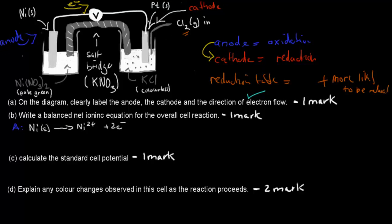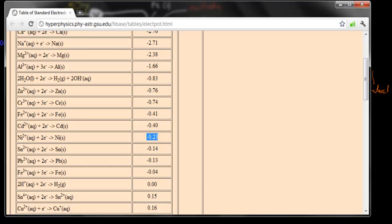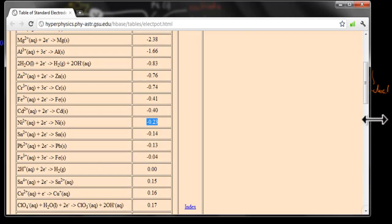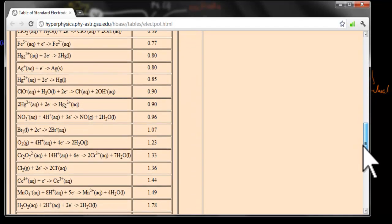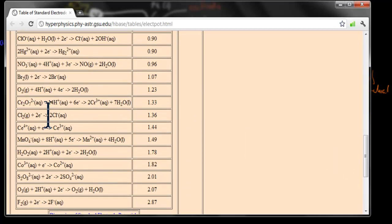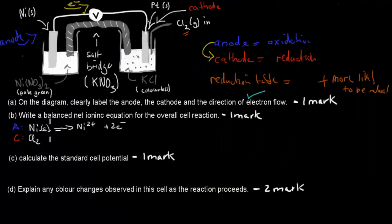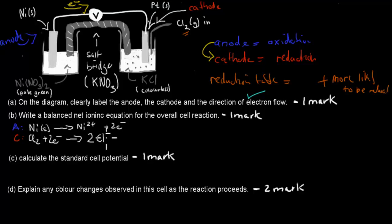For the cathode half-equation, check the reduction potential table — it gives you the equation directly. Chlorine gas picks up two electrons and becomes two chloride ions: Cl₂(g) + 2e⁻ → 2Cl⁻(aq). The electrons are balanced: nickel releases two electrons and chlorine picks up those same two electrons, with two Cl⁻ ions formed because each chlorine atom takes one electron.